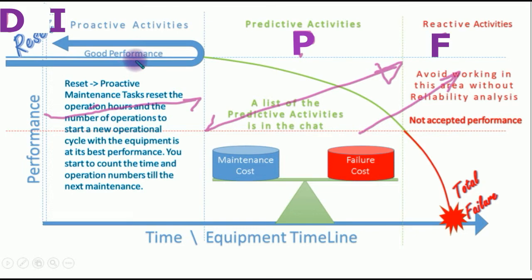When you put some predictive measurements — what we call predictive actions — it's like when you make some oil analysis. If you have a transformer, or some oiling of a gearbox, when you have some lubricants, you make analysis for your lubricants and make sure that the quality is not degraded — that it's the best quality. So you are working in this area.